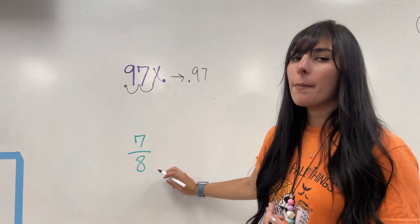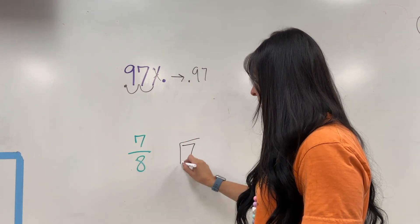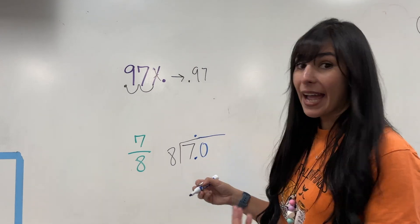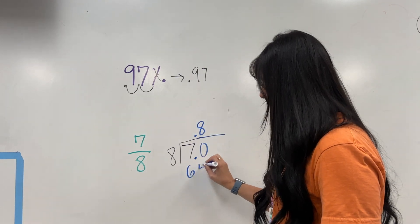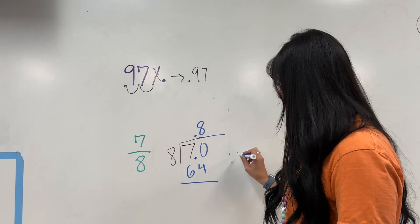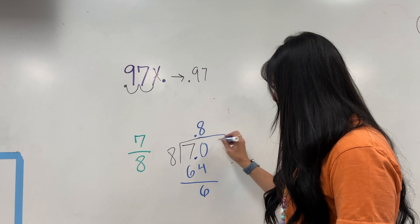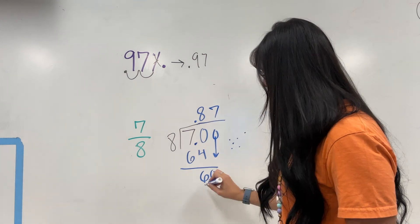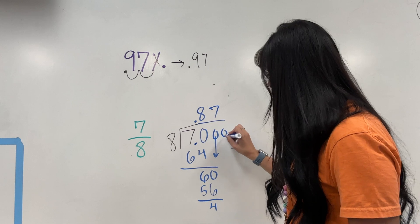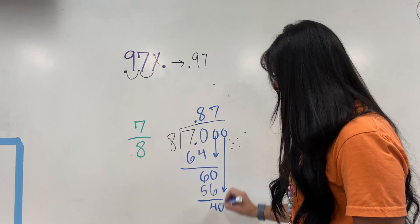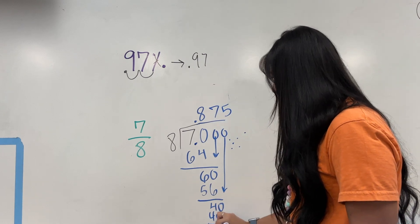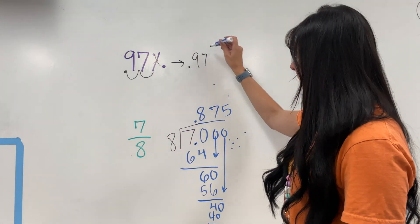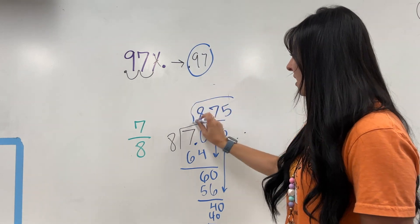For my fraction, I'm going to divide the numerator by the denominator. So I'm going to take 7 and divide it by 8. Add your decimal and extend — add that 0. 8 goes into 70, 8 times, that gives me 64, with 6 remaining. Add another 0 and bring it down. 8 goes into 60, 7 times, that gives me 56, with 4 remaining. Add another 0, bring it down. 8 goes into 40, 5 times. So now if I were to compare these — my 97% and 7 over 8 — I find that 97% is still bigger than 0.875.